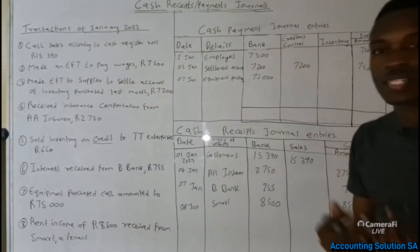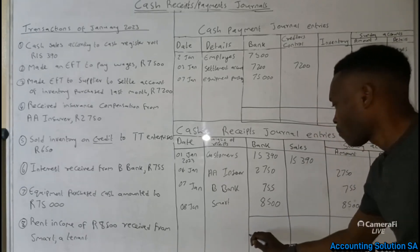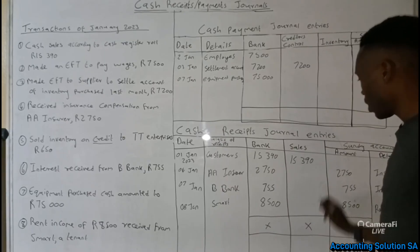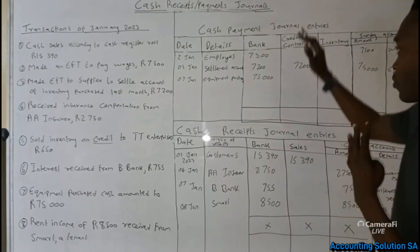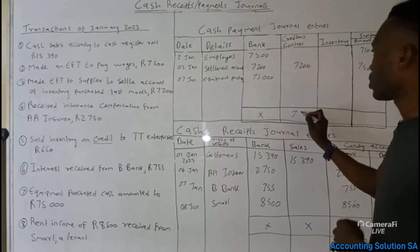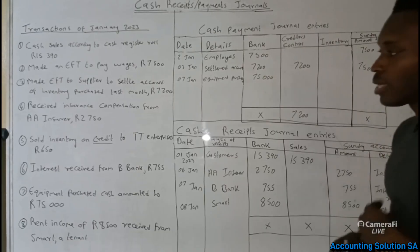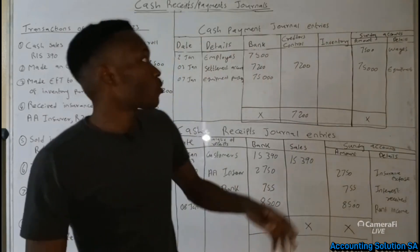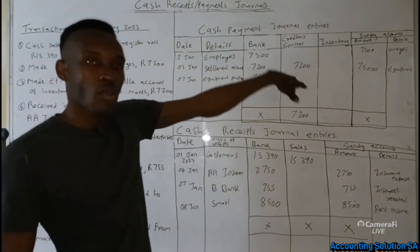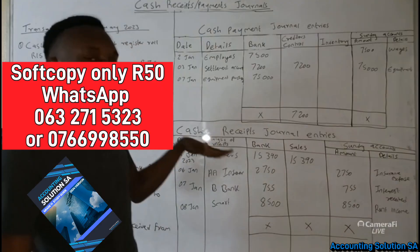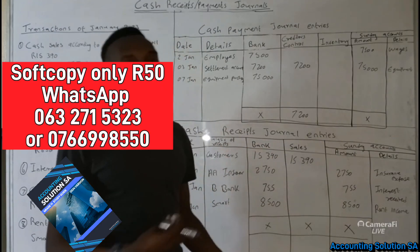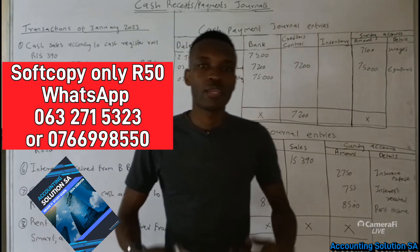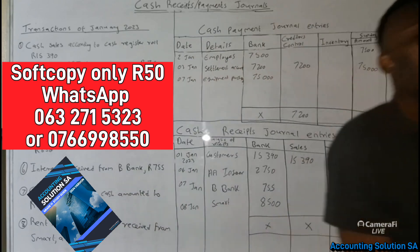That is the last transaction. Before we close, please make sure that every time you prepare cash receipts and cash payment journals you write the totals. Calculate all totals under bank, under sales, and under sundry account, and write the totals for each. On the next video we are going to include VAT input under cash payment journal and VAT output under cash receipts journal as well. I hope you enjoyed and learned something — please like, comment and subscribe so the channel can grow. Thank you, see you on the next video.